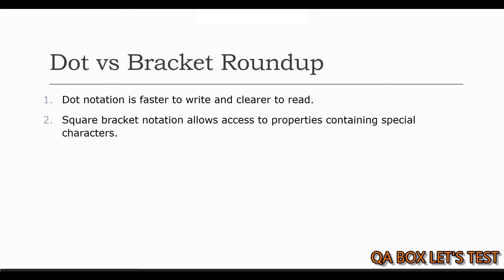Dot versus bracket roundup would be: number one, dot notation is faster to write and clearer to read, and number two, square bracket notation allows access to properties containing special characters.